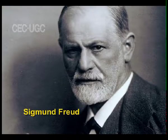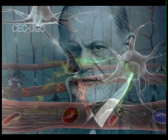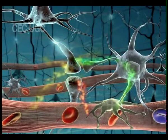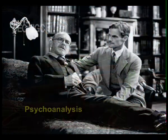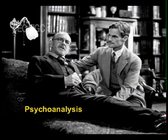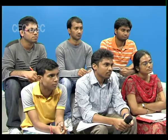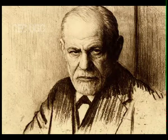Sigmund Freud was a neurologist in Vienna. He often treated people who were troubled by nervous disorders. He developed an innovative procedure called psychoanalysis for the treatment of mental disorders. Freud's psychodynamic theory emphasizes that the experiences of early childhood shaped the development of adult personality. Freud's theory suggests that unconscious forces act to determine personality and behavior.